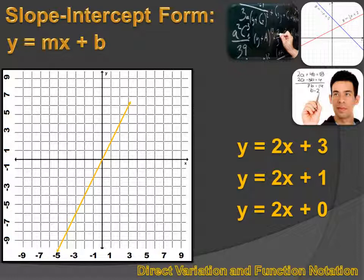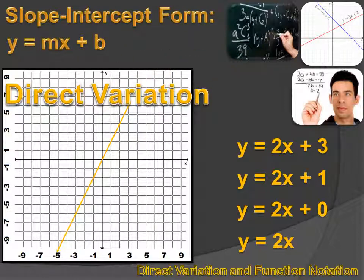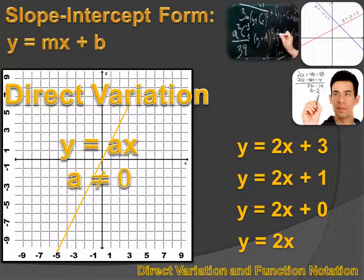Now, we could rewrite this last equation as y equals 2x. And that form, y equals 2x, is a direct variation. A direct variation is an equation or a line that passes through the origin, which is the same as saying that the y-intercept is 0. It's a straight line and can be written in the form y equals ax, and a cannot equal 0.